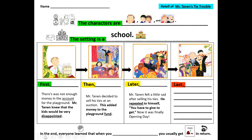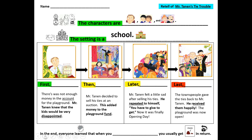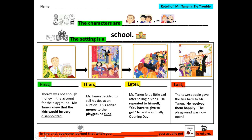Last — what happened in the end? The townspeople gave the ties back to Mr. Tannen. He received them happily. The playground was now open. In the end, everyone learned that when you give, you usually get more in return. Because, remember, Mr. Tannen repeated, 'You have to give to get.'